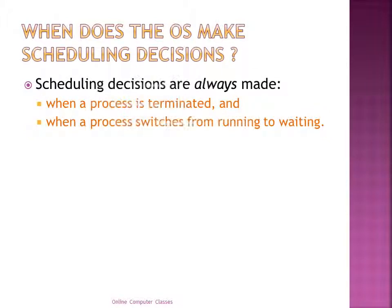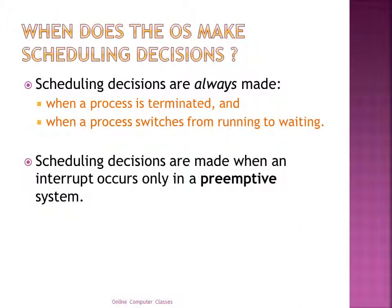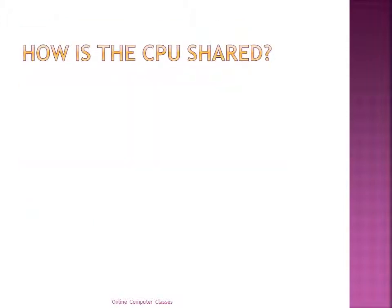The operating system makes a scheduling decision when a process is terminated, or when a process switches from running to waiting state. Scheduling decisions are also made when an interrupt occurs, but only in a preemptive system. There are two types of systems: preemptive and non-preemptive. In a preemptive system, the operating system has to decide which process will get the CPU when an interrupt occurs.